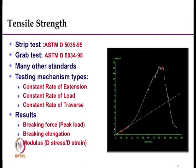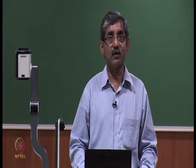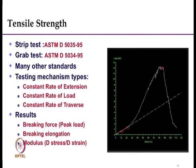The first mechanical property which is important for filter fabrics is tensile strength. Tensile strength can be tested as per strip test which follows ASTM D5035, grab test, and many other standards are also available. Testing mechanisms which affect the tensile strength results are gauge length and speeds — constant rate of extension, constant rate of loading, and constant rate of traverse.